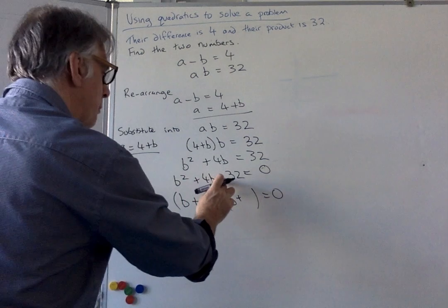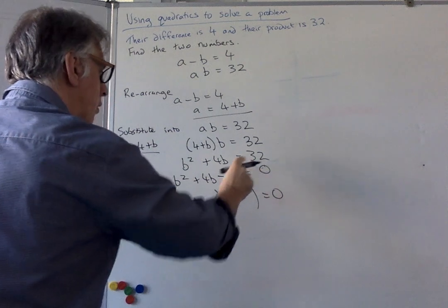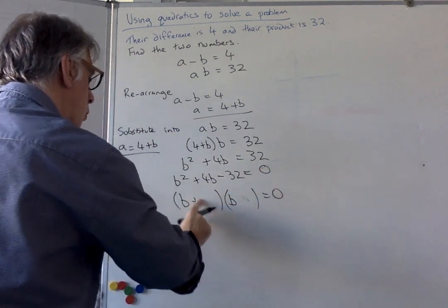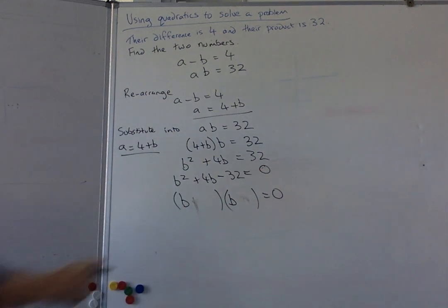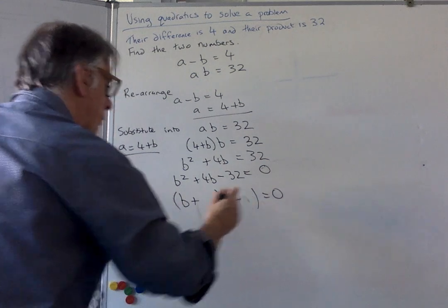Oh, I've made a mistake. It should be minus 32 there, because we substituted there. Whoops, but I will carry on. OK, that should be minus 32. You've got to be very careful. So then that of course makes one of them a plus and one of them a minus.